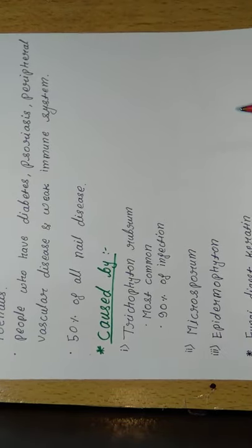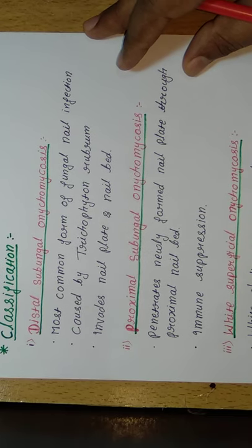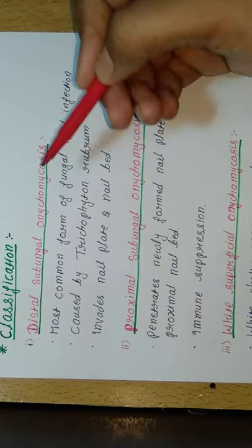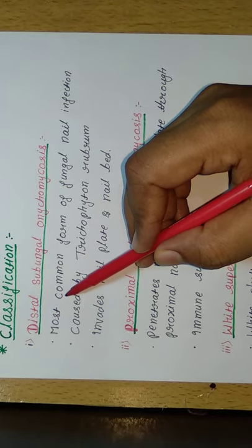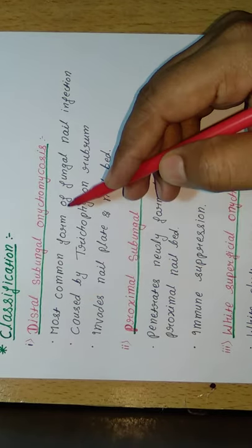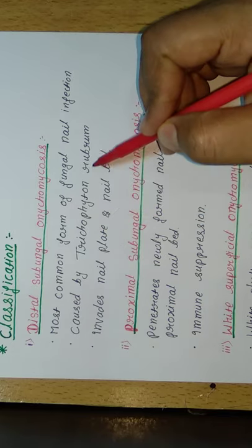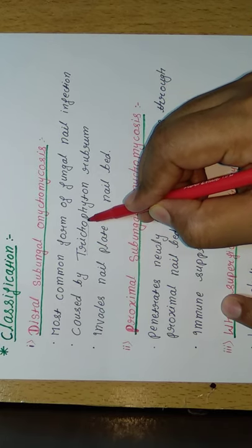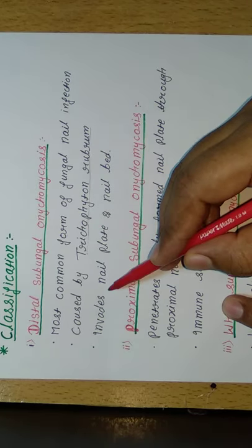Now moving to the classification of onychomycosis. Onychomycosis is classified into four subtypes. The first one is distal subungal onychomycosis. This is the most common form of fungal nail infection and is caused by Trichophyton rubrum, which is the most common causative organism of distal onychomycosis.